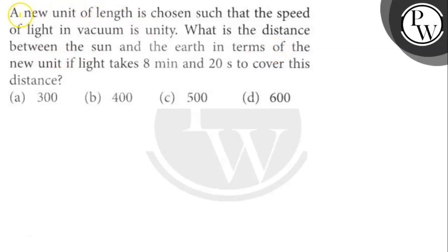Hello Bacho. Let's read the question. A new unit of length is chosen such that the speed of light in vacuum is unity. What is the distance between the sun and the earth in terms of the new unit if light takes 8 minutes and 20 seconds to cover this distance? Let's find out.